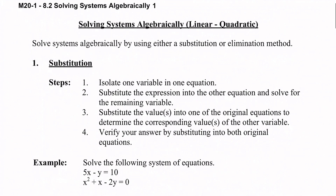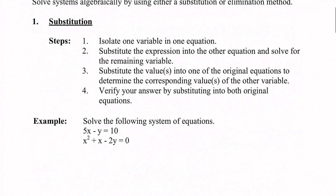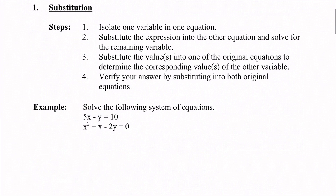The steps for substitution are on the page — there are 4 steps. I'm going to be going through those steps as we do the question, so if you want to pause and read through the steps, you're welcome to do so. In the first example, it says solve the following system of equations: 5x minus y equals 10, and x squared plus x minus 2y equals 0.